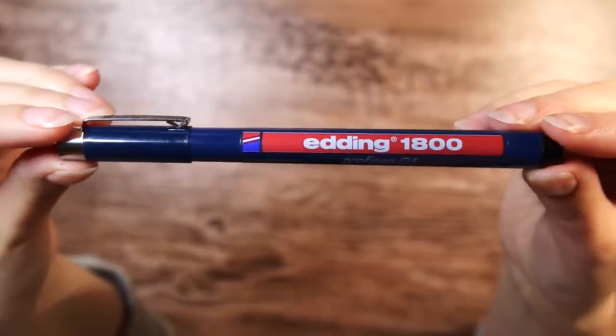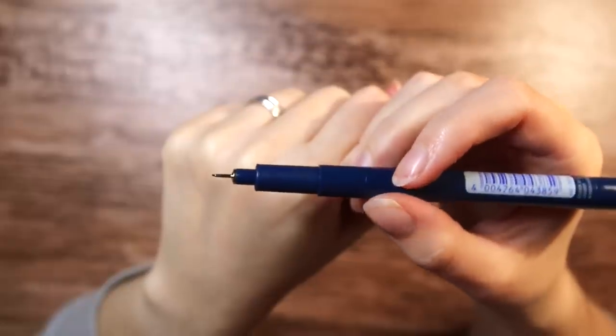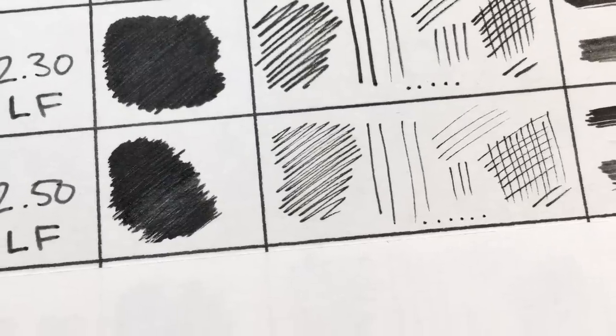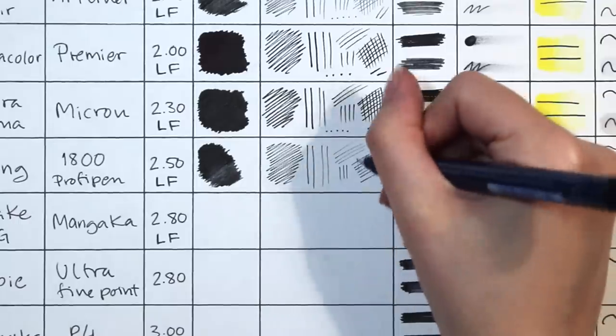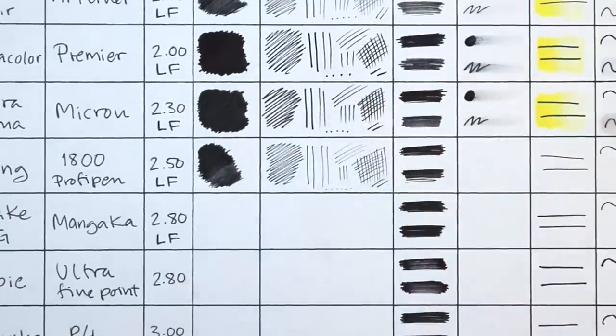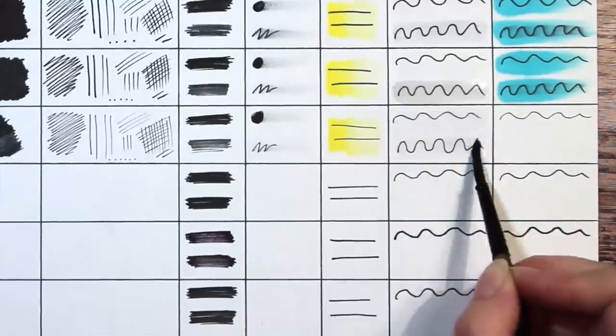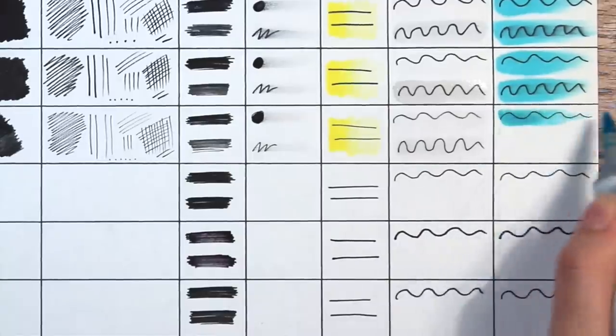Next is the Edding 1800 profi pen for about $2.50 and it's lightfast. The pigment test turned out a little streaky but have in mind that this pen had a very fine tip so it is hard to get an even solid smooth color. The lines are very crisp though. It's holding up really well on the water test, there is almost no smudging on the fresh line test. And it also passes on the alcohol test.